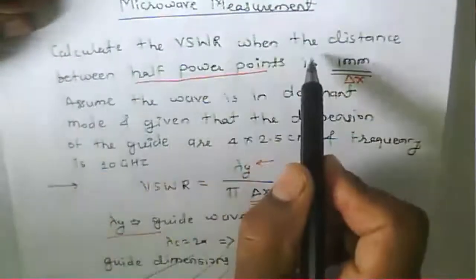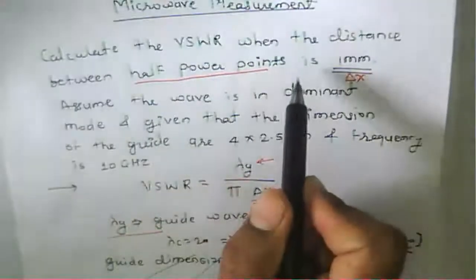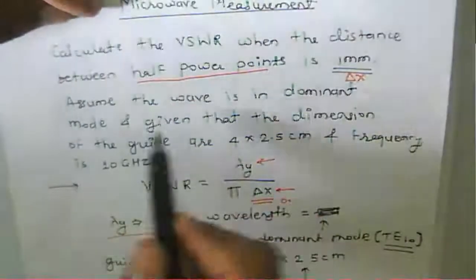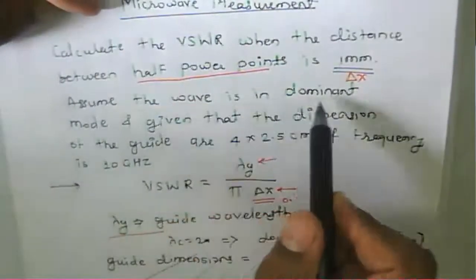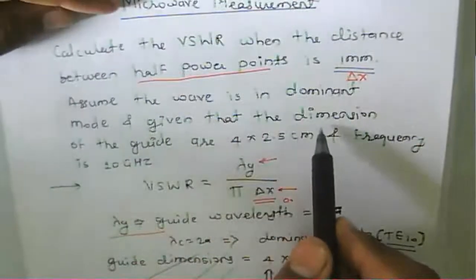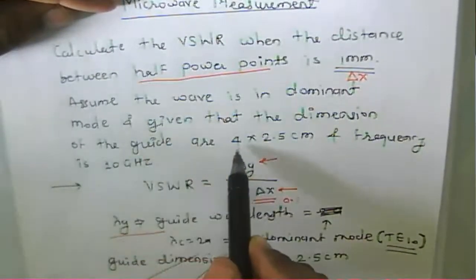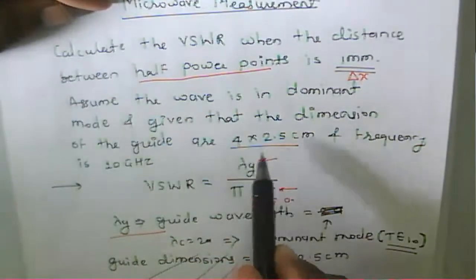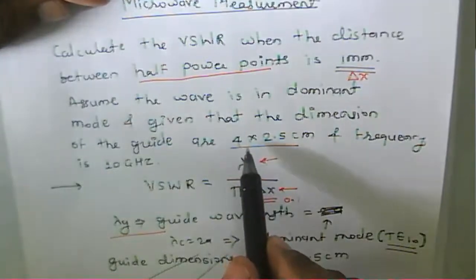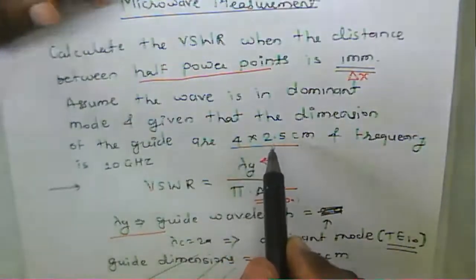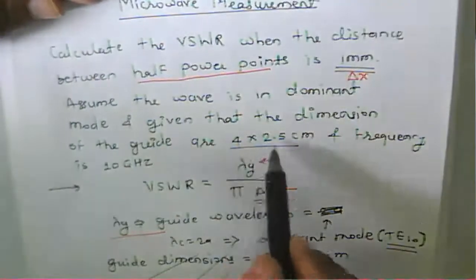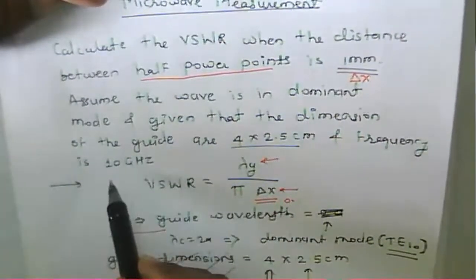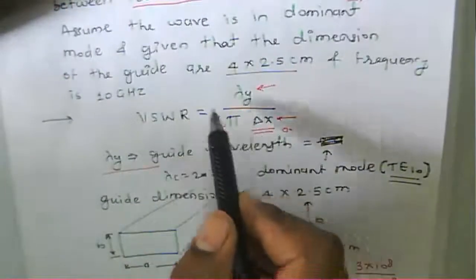Now the next problem: the distance between the half power points is 1 mm, that is del x. The wave is in the dominant mode, and the dimensions of the guide are 4 cm by 2.5 cm, that is a by b, where a is greater than b. The frequency is 10 GHz, and we need to find the VSWR.